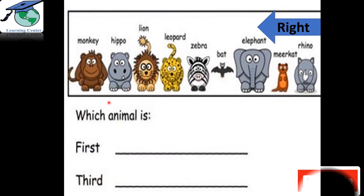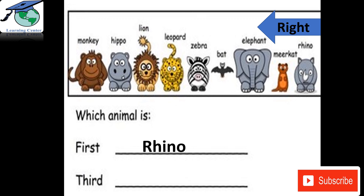You can see all the animals are standing in a straight line. From the right, we will see which animals are there: first is rhino, second is meerkat, third is elephant, fourth is bat, fifth is zebra, sixth is leopard, seventh is lion, eighth is hippo, ninth is monkey. Which animal is first? Yes, it is the rhino. Which animal is the third? It is the elephant.